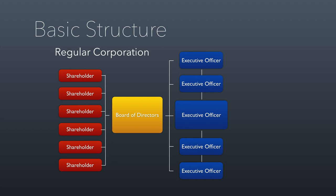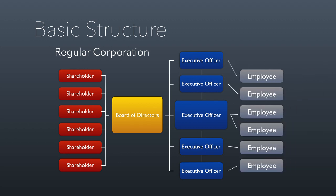Executive officers are sort of like super employees, and we're going to talk about them in the next class session. The basic idea is that the executive officers work for the board of directors — that might be a CEO or executive director in the case of a nonprofit, along with vice presidents, CTOs, CIOs, and all those other executive-level positions. They then hire employees who carry out the day-to-day tasks of running the corporation.